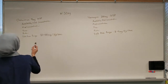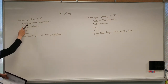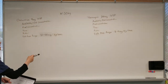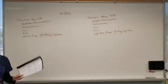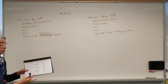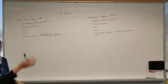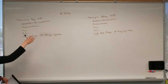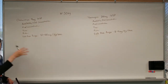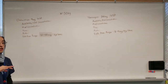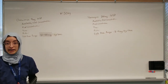Our first order is ondansetron 4 milligrams IV syringe pump, and all this information we're going to need to find through our IV resource book. This is a black book that's available in the lab and it has all the information that will fill in the blanks. To figure out what your safe dose range is, you'll have to do that research yourself — look online for the safe dose range for that particular medication.